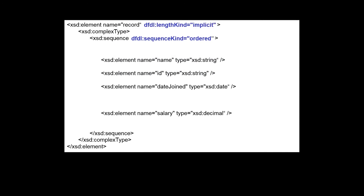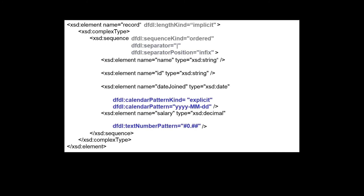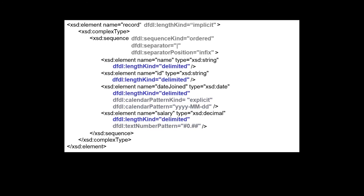We still have DFDL properties that specify that the length of the record is implicit and that the sequence is ordered. However, in this DFDL schema we have a couple of additional DFDL properties on the sequence. The properties specify the character that is used as the delimiter — in this case the pipe character — and that this character occurs between the elements but not at the beginning or end of the sequence. This type of delimiter is known as an infix separator. The date joined element still has a DFDL property that specifies the date format, and the salary element has a DFDL property that specifies the number format. But instead of specifying explicit lengths for the elements in the sequence, the DFDL property specifies that the length of each element is delimited, meaning the length is variable and determined by looking at the delimiters in the data.